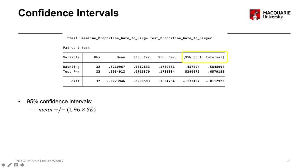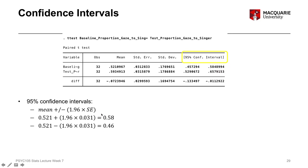Remember, the standard error is a measure of variability. So if we wanted to calculate the confidence interval for the baseline proportion of gaze, we take our mean score of 0.521. To calculate the upper bound, we do the mean score plus 1.96 times the standard error, which gives us 0.58 — exactly what the data shows. For the lower bound, it's the mean score minus 1.96 times the standard error, giving us 0.46, which rounding is the same as the value shown.